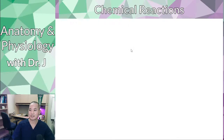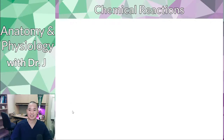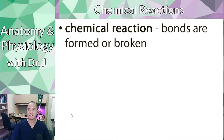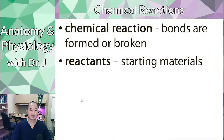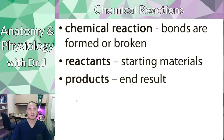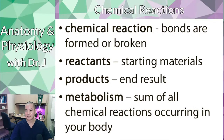Now let's talk about chemical reactions. Bonds between atoms are like relationships, and chemical reactions are dynamic changes that happen in those relationships. With a chemical reaction, bonds are formed or broken. Reactants are your starting materials and products are the end result.